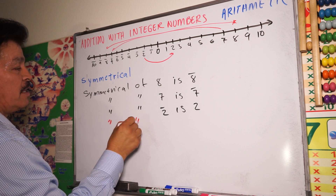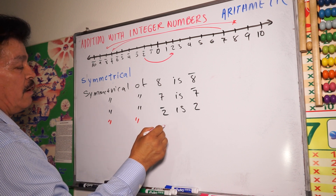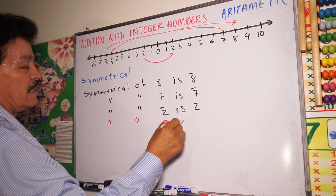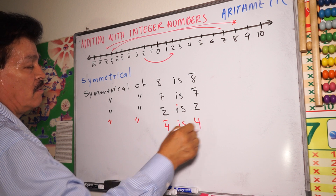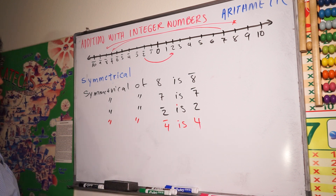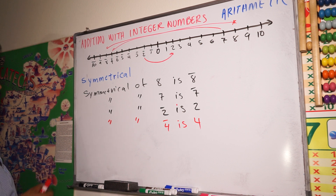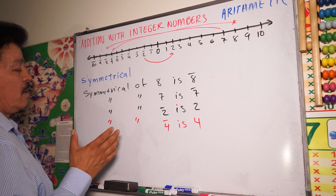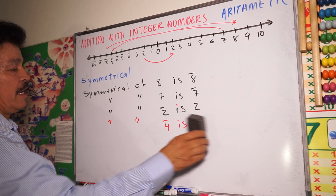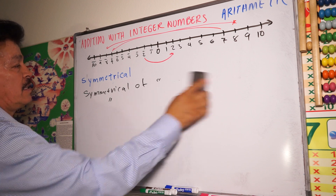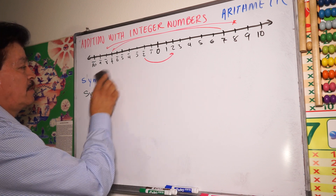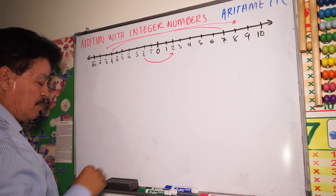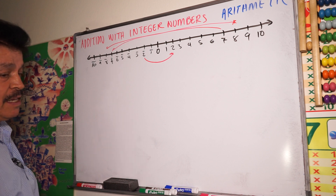The symmetrical — for example, the symmetrical of negative four is four, right? That's the symmetrical numbers — integers, or whatever numbers. Once you understand where the symmetrical is, the addition is very simple.